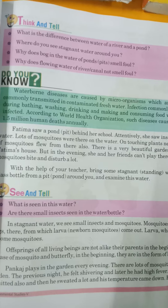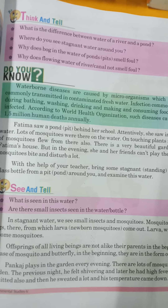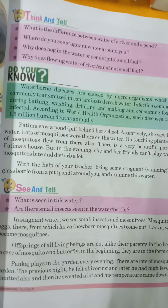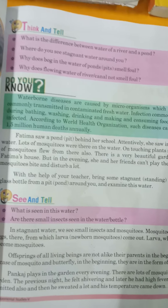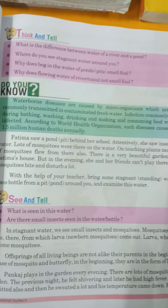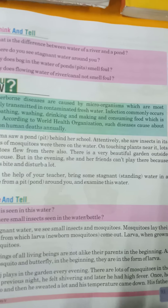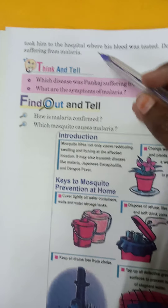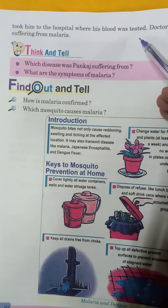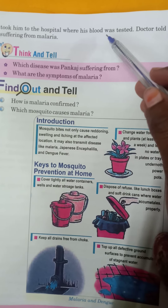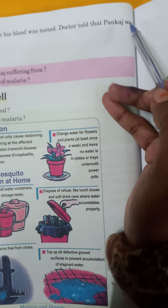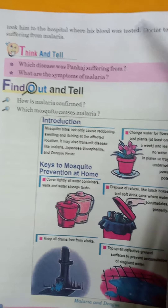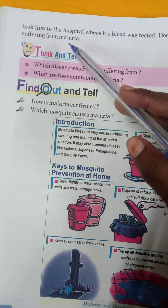The previous night Pankaj felt shivering and later he had high fever; once he vomited also, then he sweated a lot and his temperature came down. पिछली रात क्या हुआ उसको कापी आई और उसको तेज बुखार आ गया, और एक बार जब उसने उल्टी कर दी तो उसको बहुत सारा पसीना आ गया और उसका तापमान कम हो गया। His father took him to the hospital where his blood was tested. उसके पिता उसे hospital ले गए जहाँ पर उसके खून की जाँच हुई। Doctor told that Pankaj was suffering from malaria. तो doctor ने बताया कि Pankaj को malaria हुआ है।